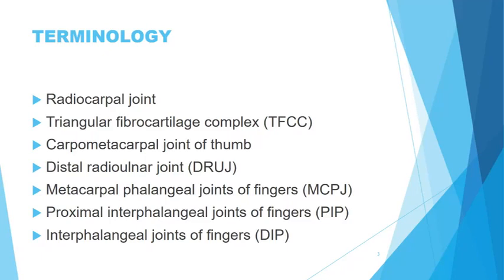Where are your MCPJs — metacarpophalangeal joints? They are just below your carpals. If you run down the big bones of your hand and reach your knuckles, that's where your MCPJs are. Moving your fingers down from there: PIPs — proximal interphalangeal joints — and then DIPs, the very distal joints of your fingers.